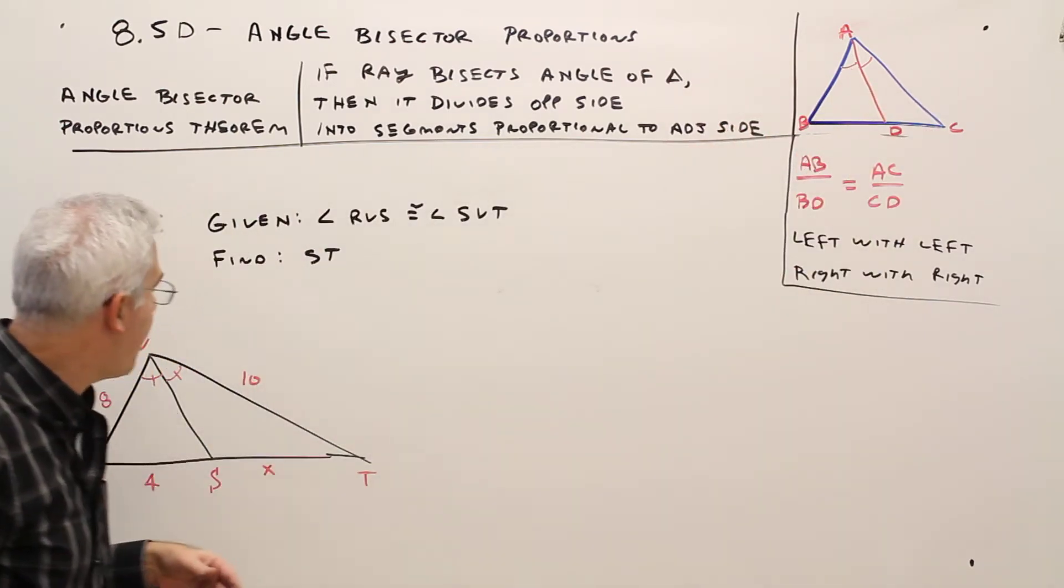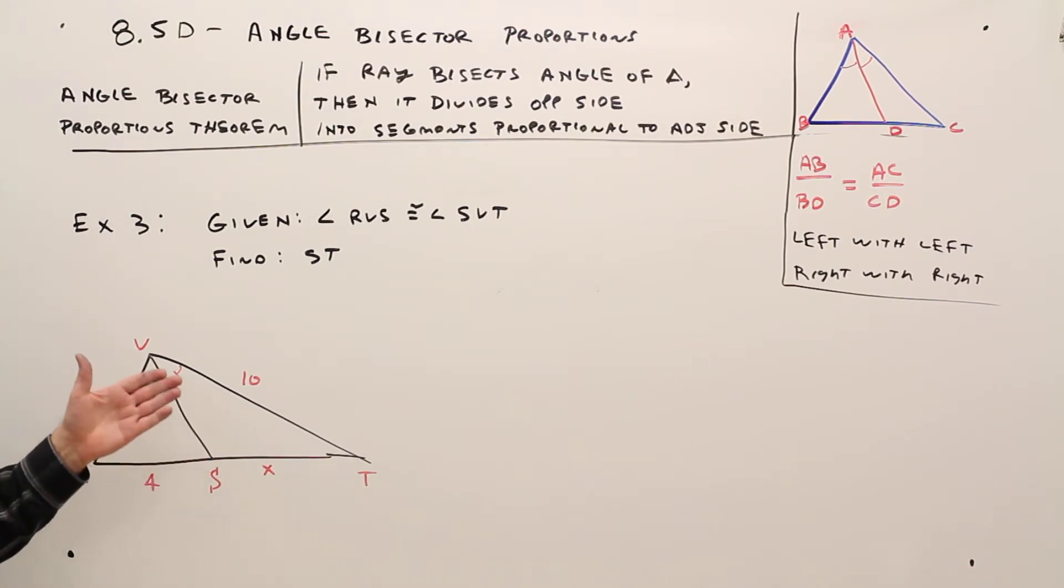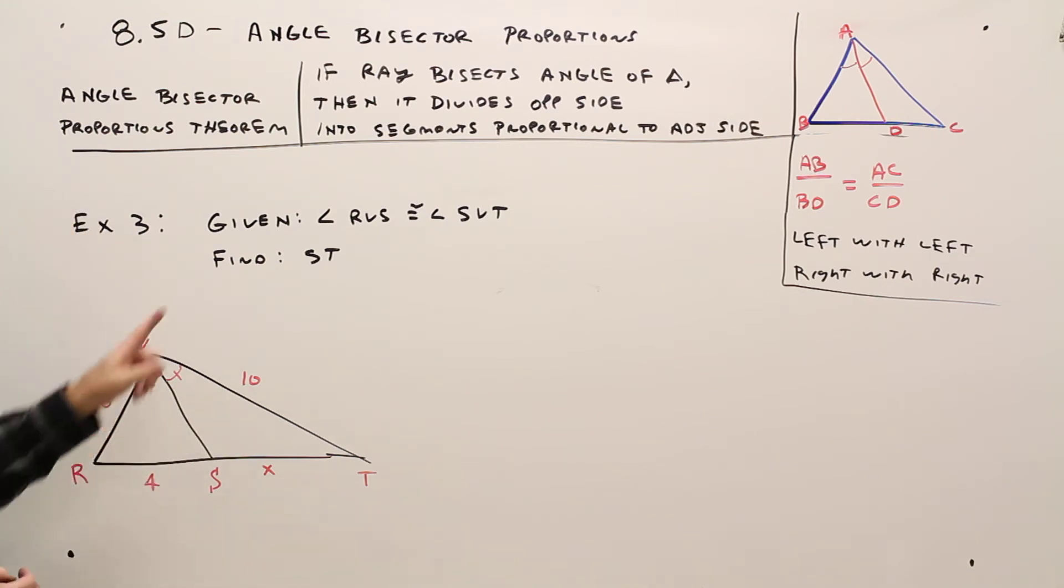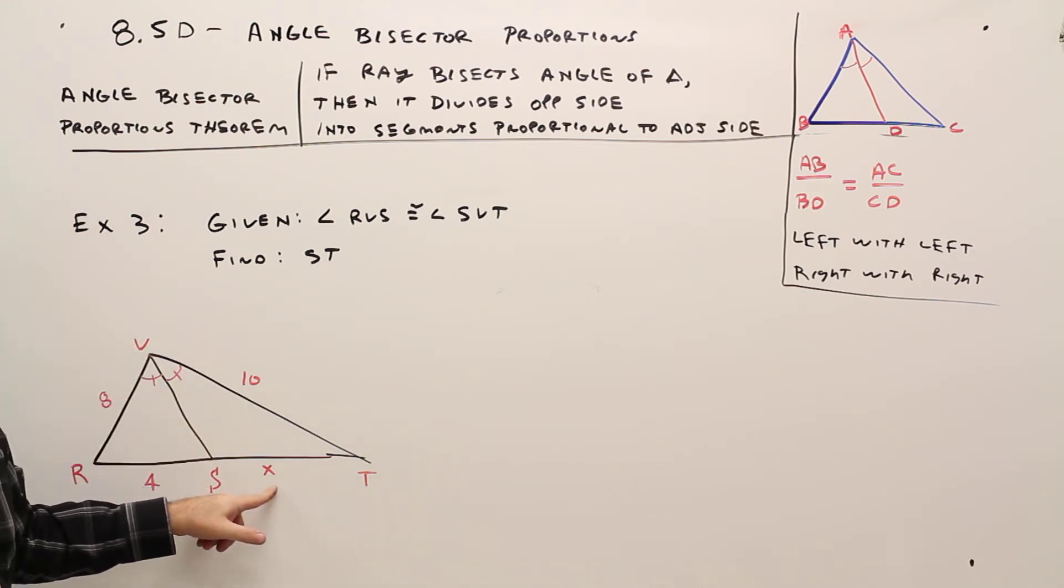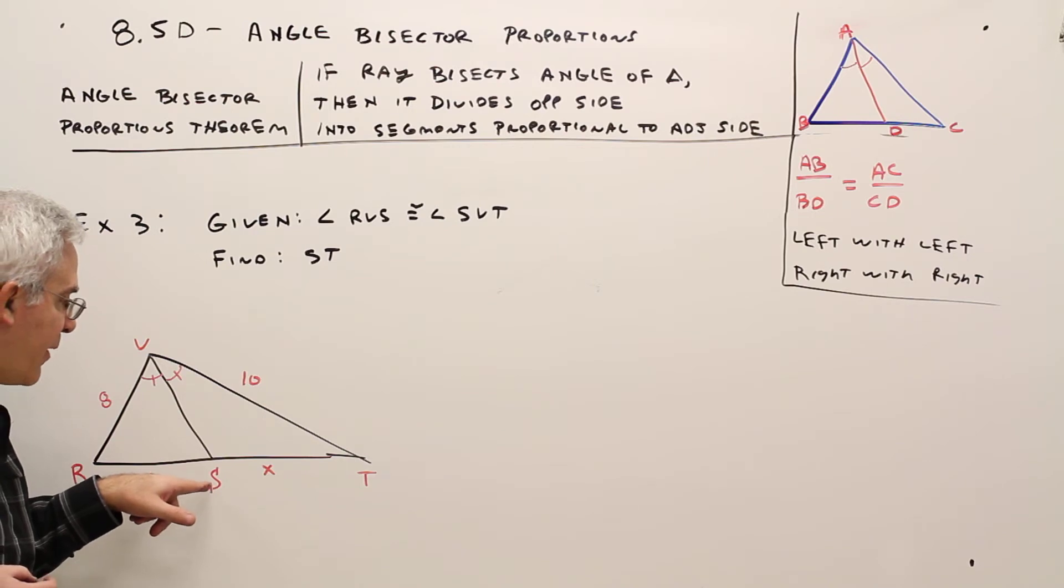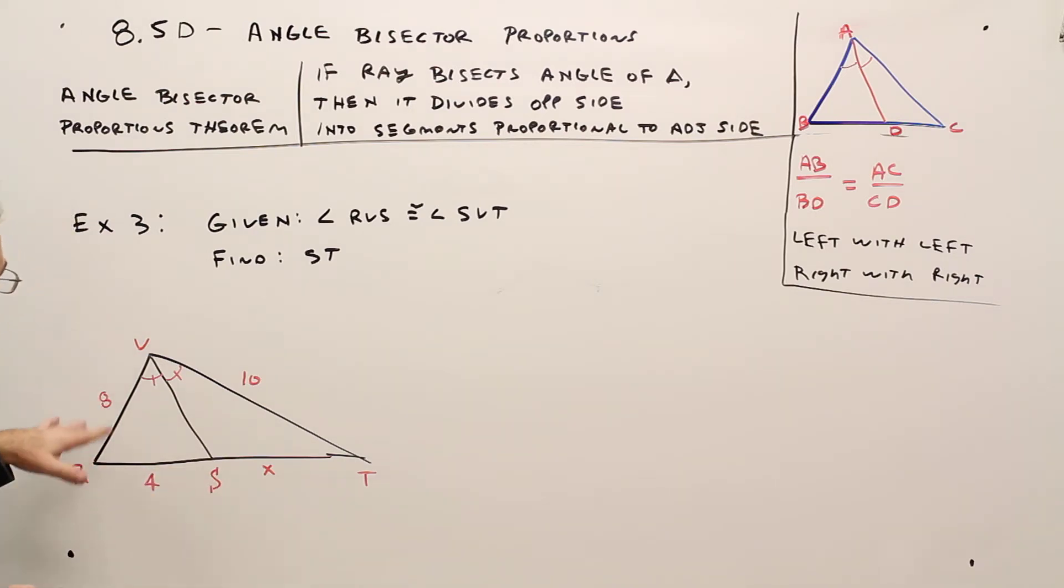Okay, so here's a basic example, example 3. Given angle RBS is congruent to angle SVT, so that means I've got an angle bisector. Find ST, it's labeled X here. And just to let you know, I bar my S's so they don't look like the number 5. Before I didn't do that, they look like a 5. Alright.